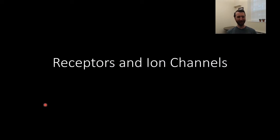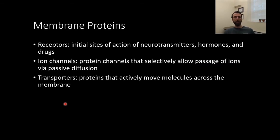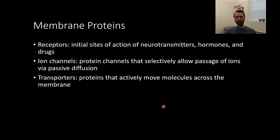Today we are talking about receptors and ion channels. Membrane proteins are proteins that are bound to the membranes of your neurons. Things we're talking about that fit in this category today are receptors, which are the initial sites of action for neurotransmitters, hormones, and drugs. Ion channels are protein channels that selectively allow the passage of ions via passive diffusion. And transporters are proteins that actively move molecules across the membrane, like the sodium-potassium pump that we discussed last time.